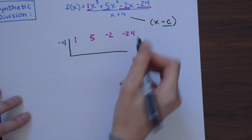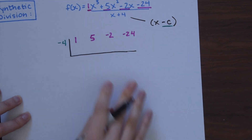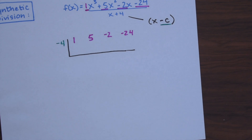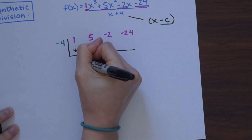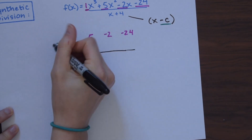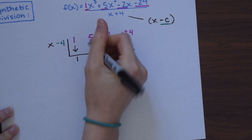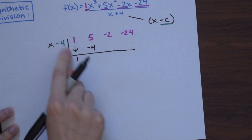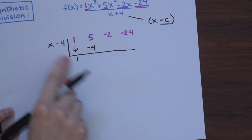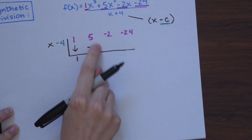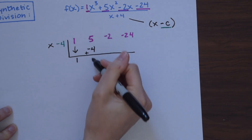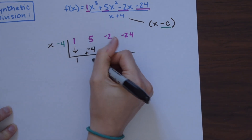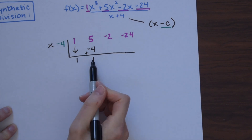Now that we have our synthetic division table set up, we can perform our synthetic division. We bring down this 1. Now we multiply 1 times negative 4, which gives us negative 4, and put that answer over here. Then on this side we're adding: 5 plus negative 4, or 5 minus 4, is just 1.